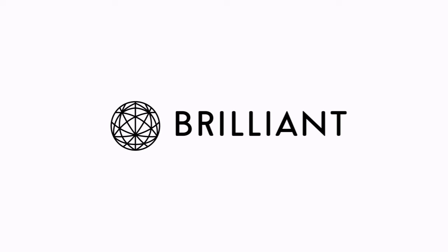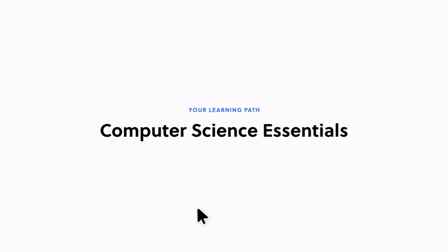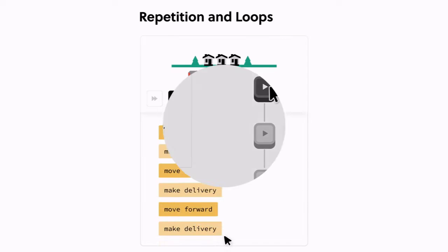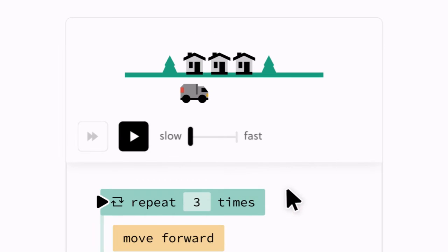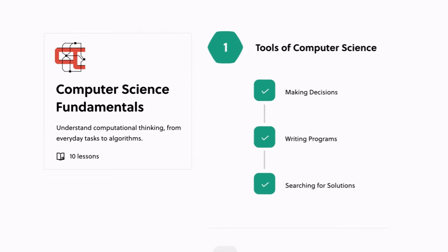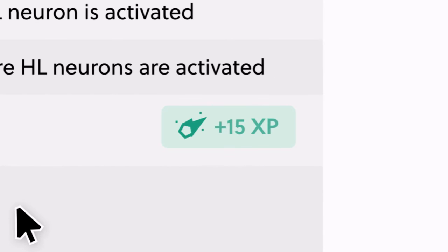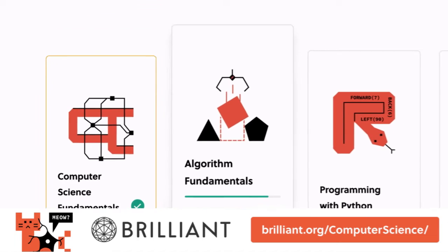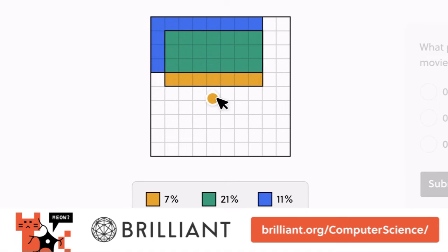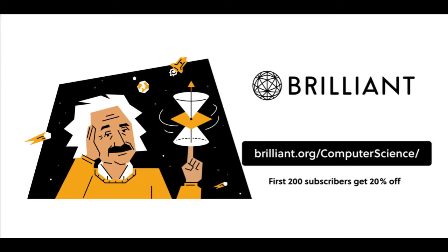This video is sponsored by Brilliant. With Brilliant you can choose what you're interested in, choose your math comfort level, and get started on your learning path. You can choose topics like computer science fundamentals and learn tools like repetition and loops. It's interactive, making learning fun and engaging. Try everything Brilliant has to offer free for 30 days at brilliant.org/computerscience. The first 200 of you get 20% off Brilliant's annual premium subscription.